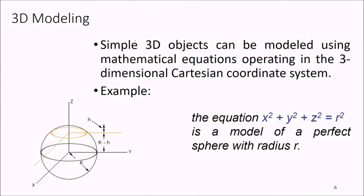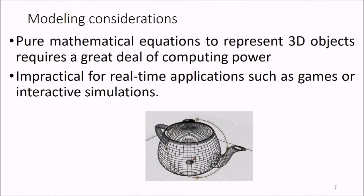Simple 3D objects can be modeled using mathematical equations operating in the 3D Cartesian coordinate system. For example, the equation x² + y² + z² = r² is a model of a perfect sphere with radius r. However, pure mathematical equations to represent 3D objects require a great deal of computing power — just imagine using this for every point.